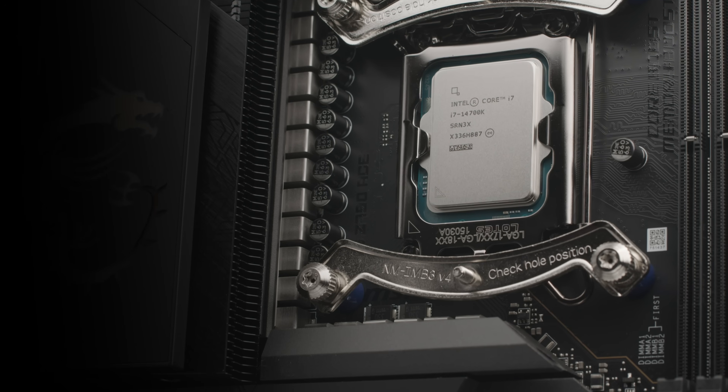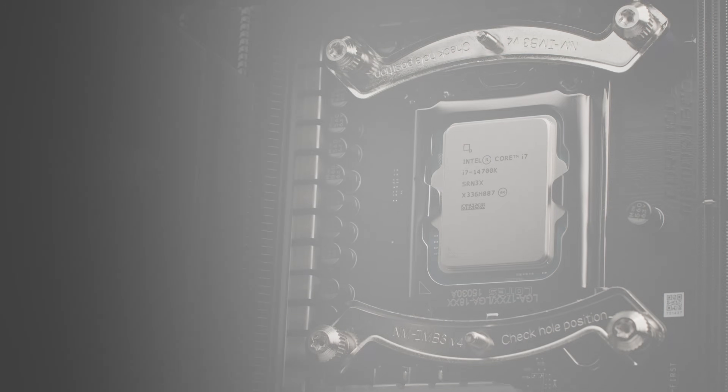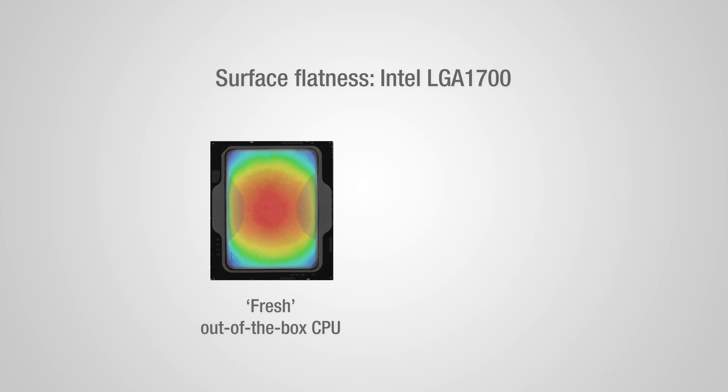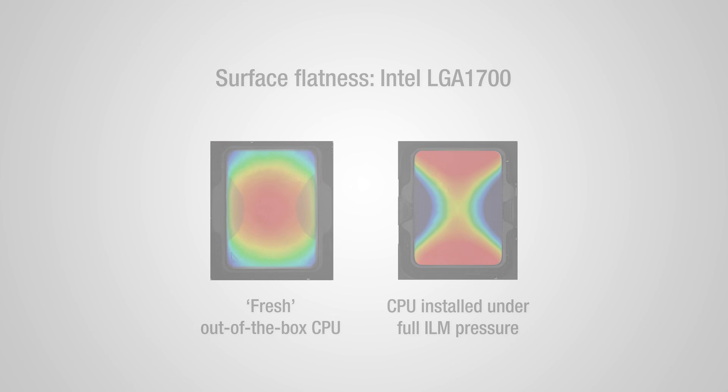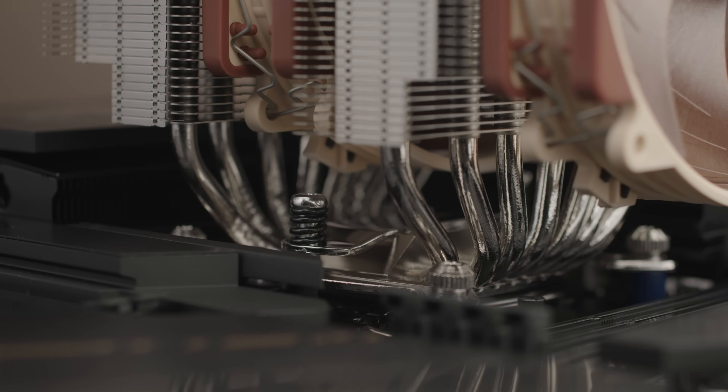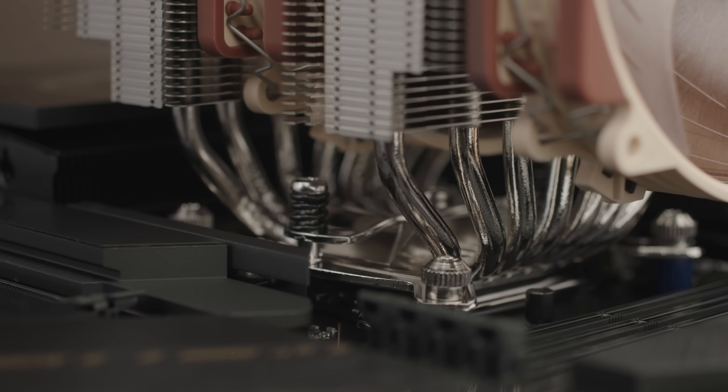Not all CPUs are created equal. In fact, today's desktop processors differ significantly with regards to the flatness of their heat spreaders, as well as their die configuration and hotspot location. Whilst Intel LGA1700 processors start as slightly convex out of the box, they quickly become highly concave once the socket's ILM, or independent loading mechanism, is closed to press the CPU into the socket. This is due to the stock pressure of the ILM causing the CPU to warp.